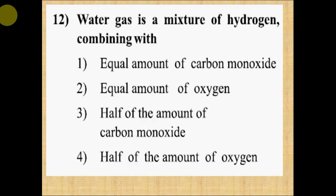Question number 12: Water gas is a mixture of hydrogen combining with: Option 1, equal amount of carbon monoxide. Option 2, equal amount of oxygen. Option 3, half of the amount of carbon monoxide. Option 4, half of the amount of oxygen. Correct answer is option 3, half of the amount of carbon monoxide.